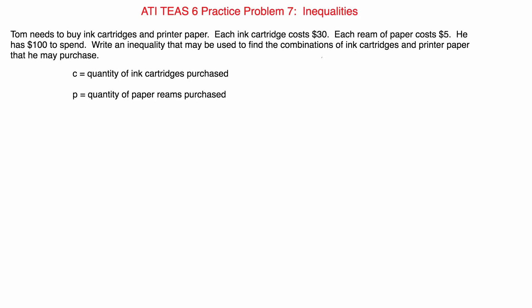Tom needs to buy ink cartridges and printer paper. Each ink cartridge costs $30. Each ream of paper costs $5. He has $100 to spend. Write an inequality that may be used to find the combinations of ink cartridges and printer paper that he may purchase.